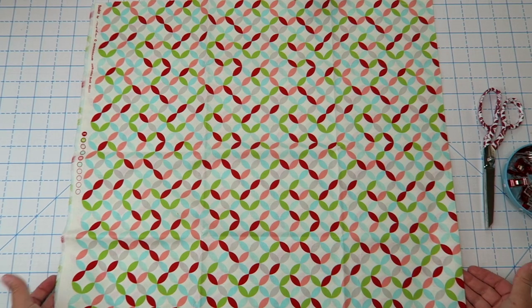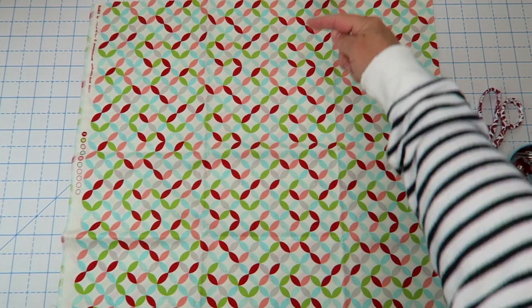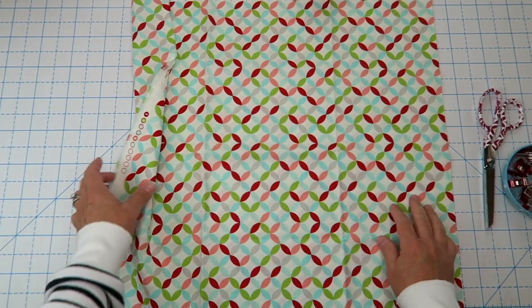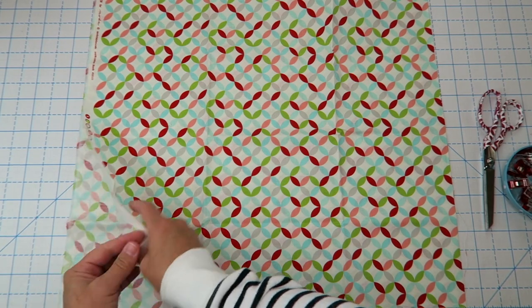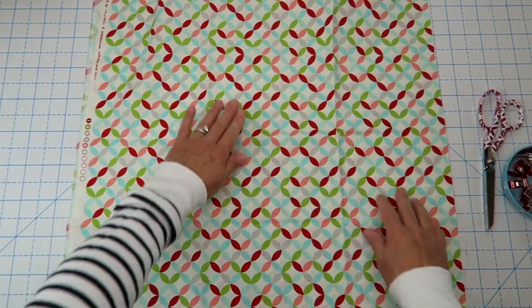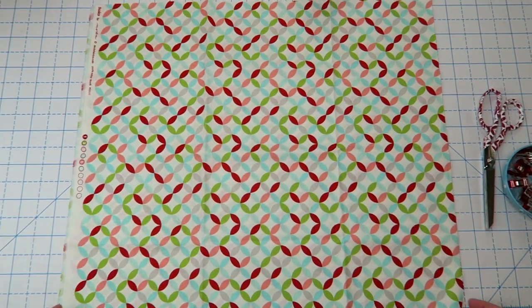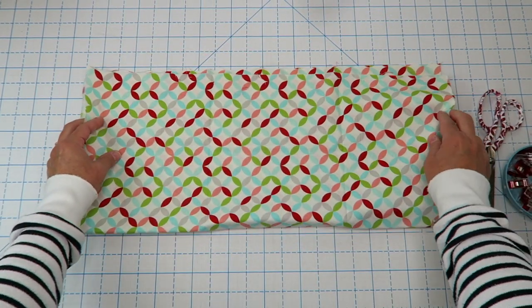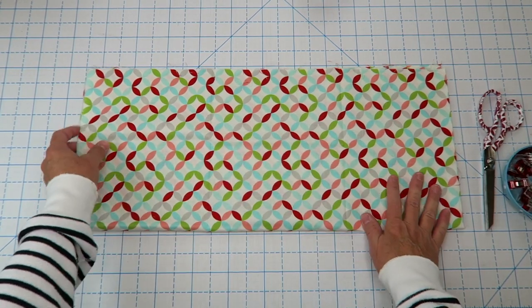So here we have our half a yard of fabric folded in half just like it came off of the bolt. You have your two selvages together on this side folded in half so you have two layers there. What we're going to want to do is take that and fold it in half one more time so you actually have four layers of fabric.